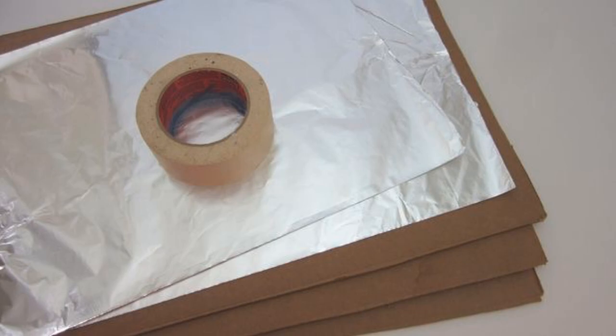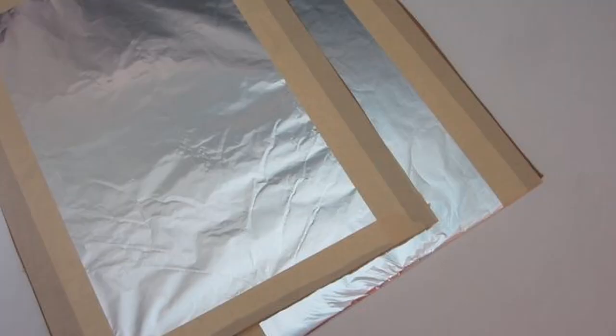You also need some aluminum foil or conductive material. You can also use copper tape, but aluminum foil is cheaper. Basically, the idea is that you will attach aluminum foil to each end, to one side of two different pieces of cardboard. And the two pieces of cardboard should be the same size. They're going to be the tops and bottoms of your sensor.